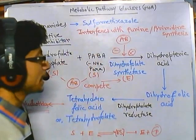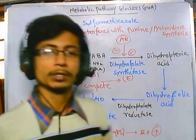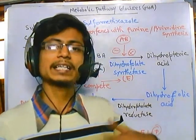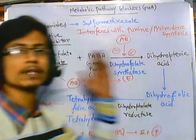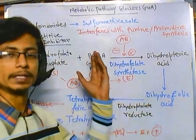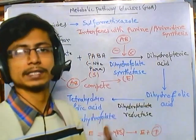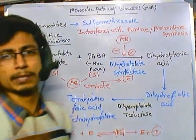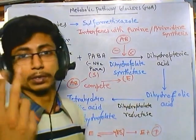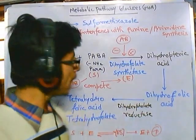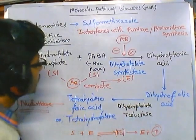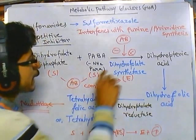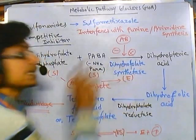In this video we are going to focus on bacterial resistance against sulfonamide-type antibiotics — how bacteria develop resistance against them. There are two or three mechanisms, and I'm going to talk about the two major ones. The first mechanism is that bacteria can alter or modify the enzyme.